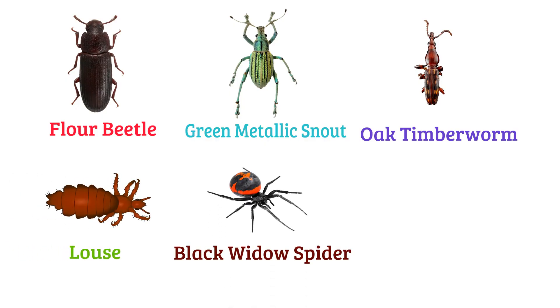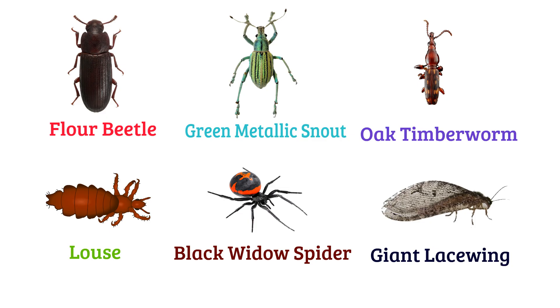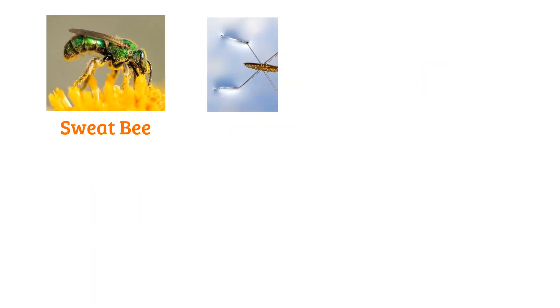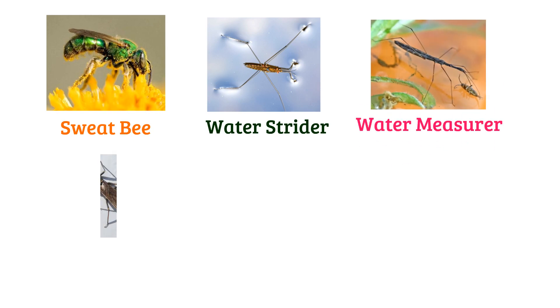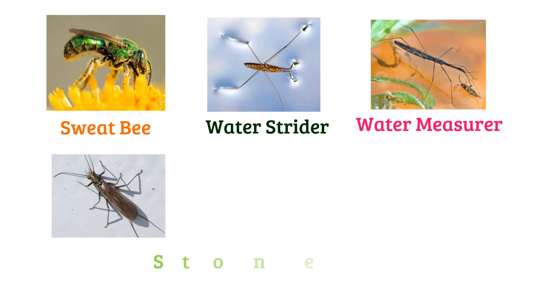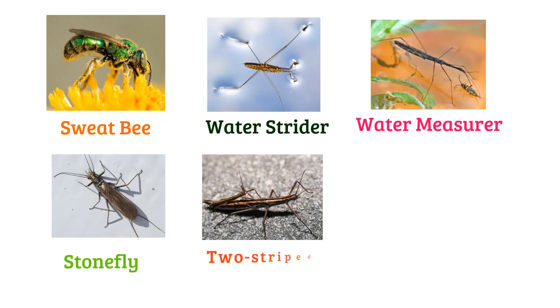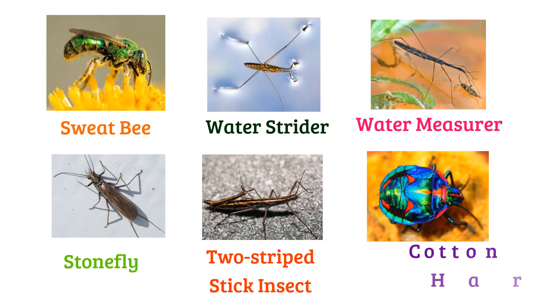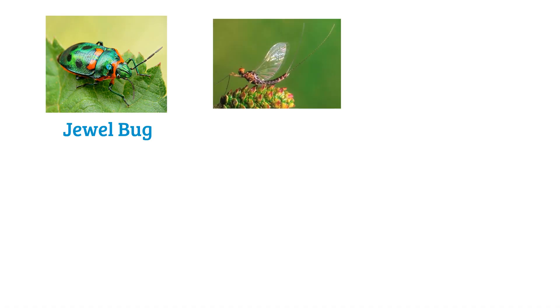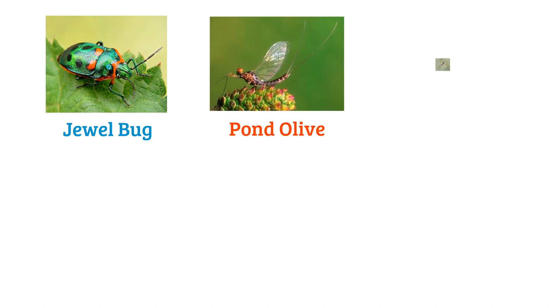Black widow spider, giant lacewing, sweat bee, water strider, water measurer, stone fly, two-striped stick insect, cotton harlequin bug, jewel bug, pond olive.